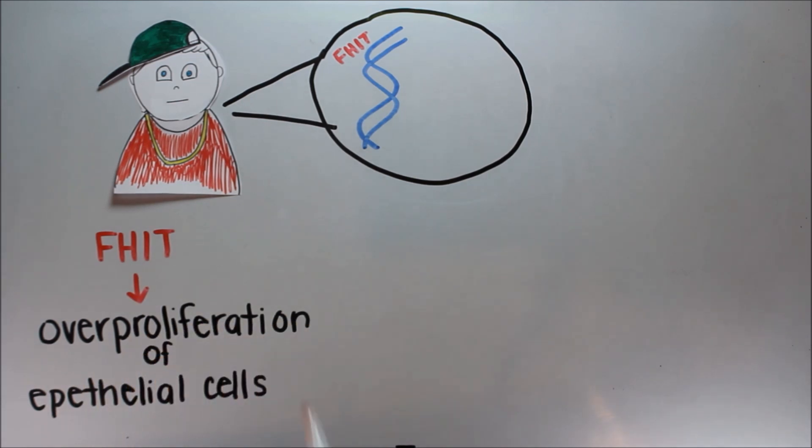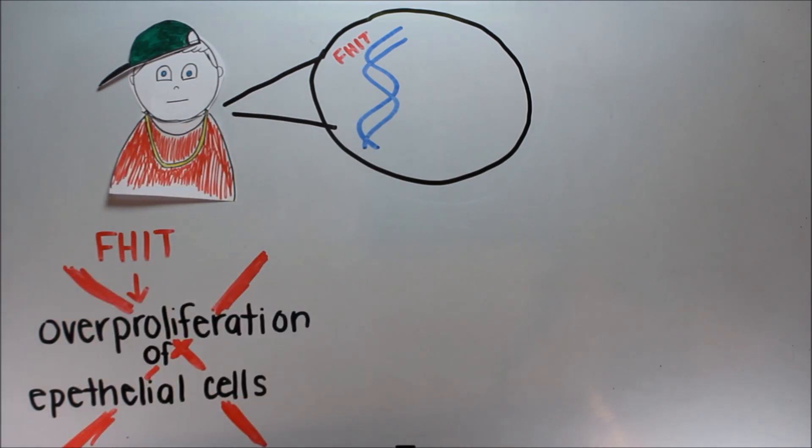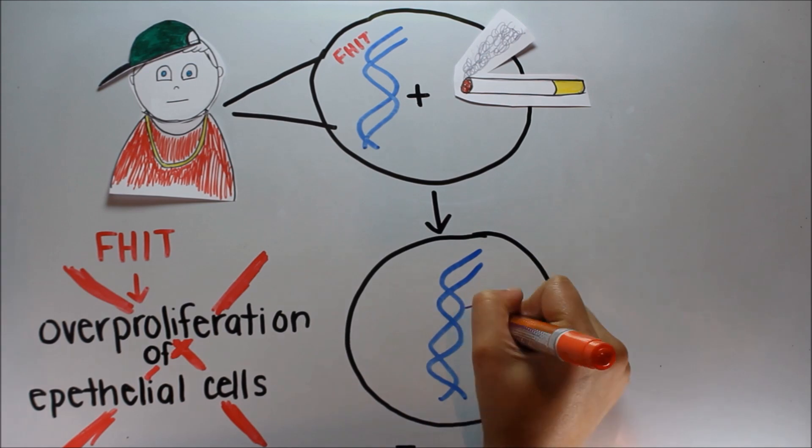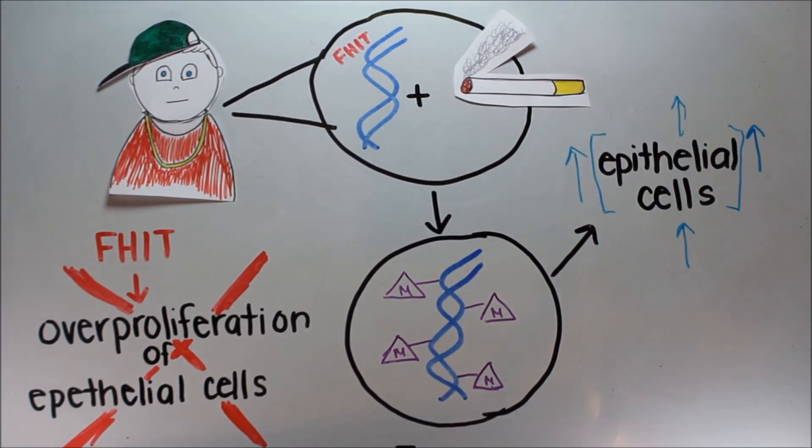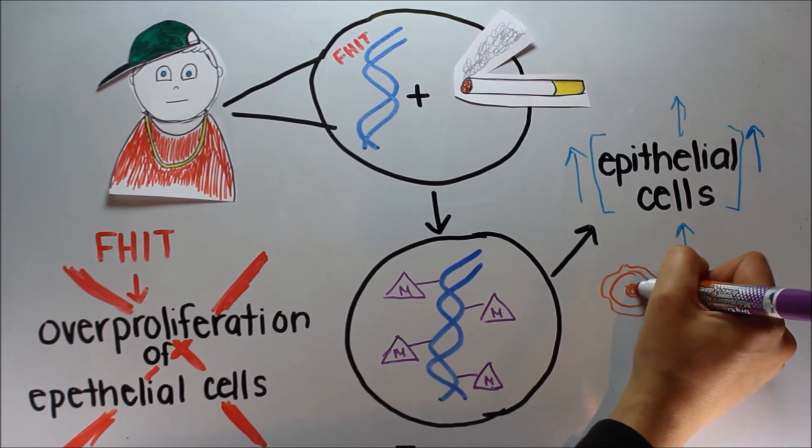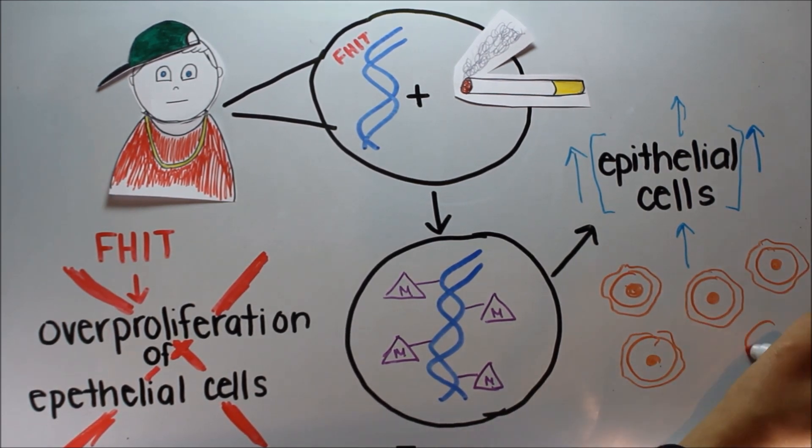The FHIT gene prevents overproliferation of epithelium cells, but since Jim was a smoker, the nicotine in his system induced FHIT methylation. Epithelial cells were no longer under control, always being rowdy and continuously on the roll. The cancer grew unrestricted, nothing to stop the esophagus from being constricted.